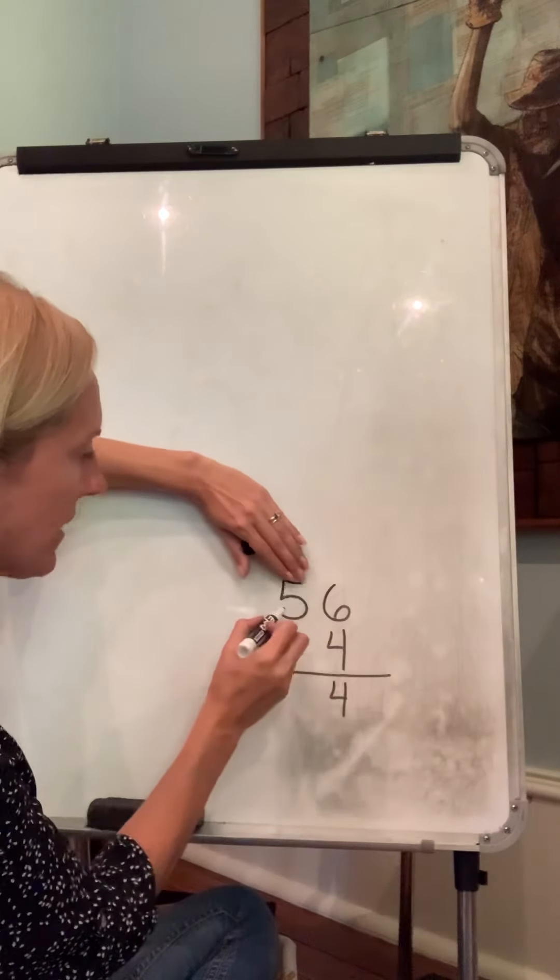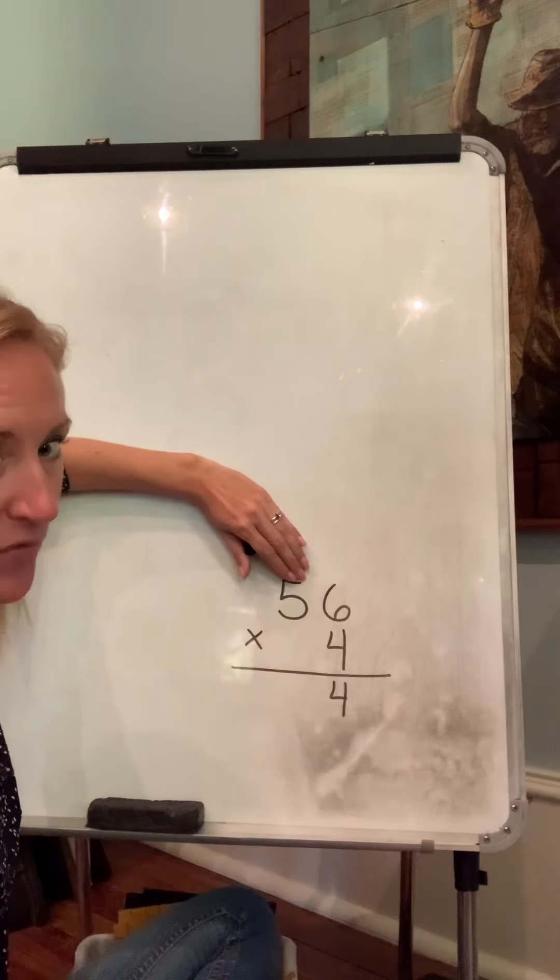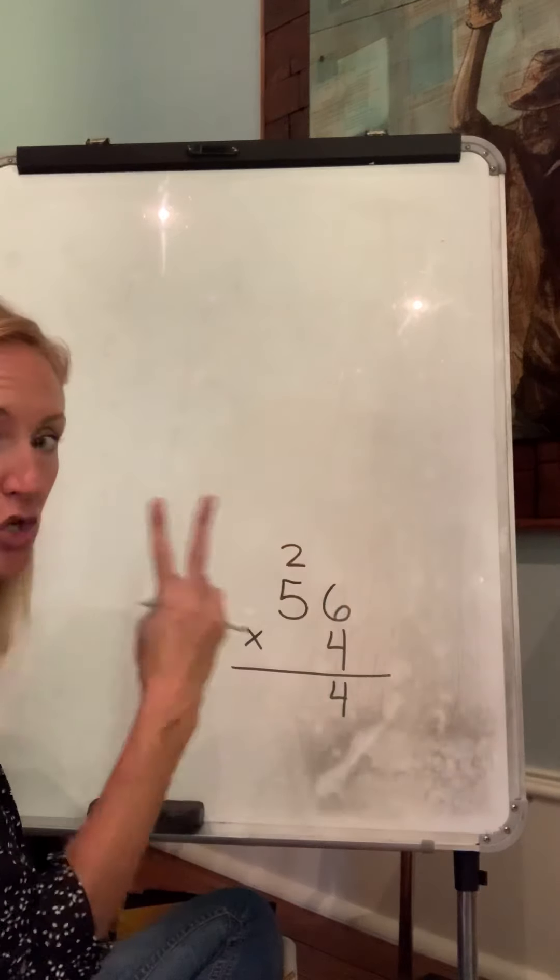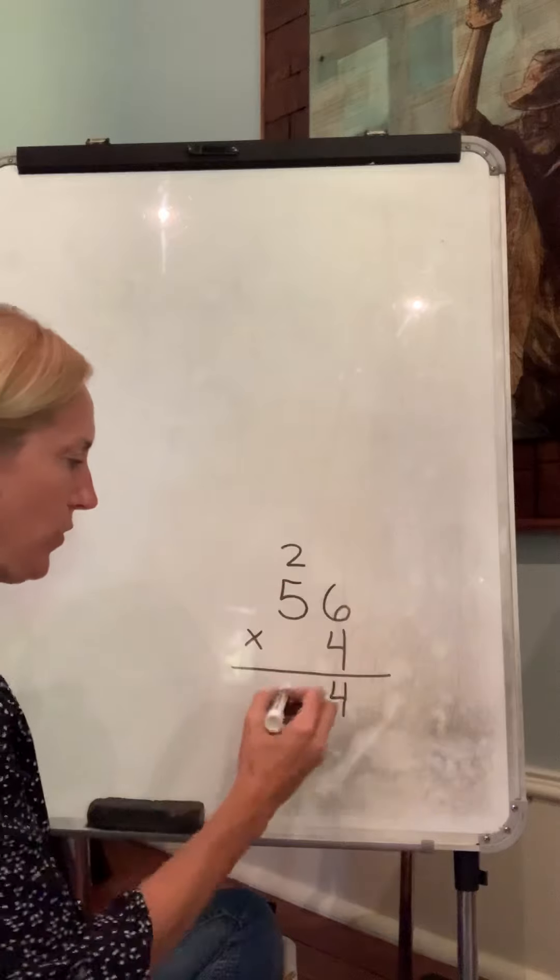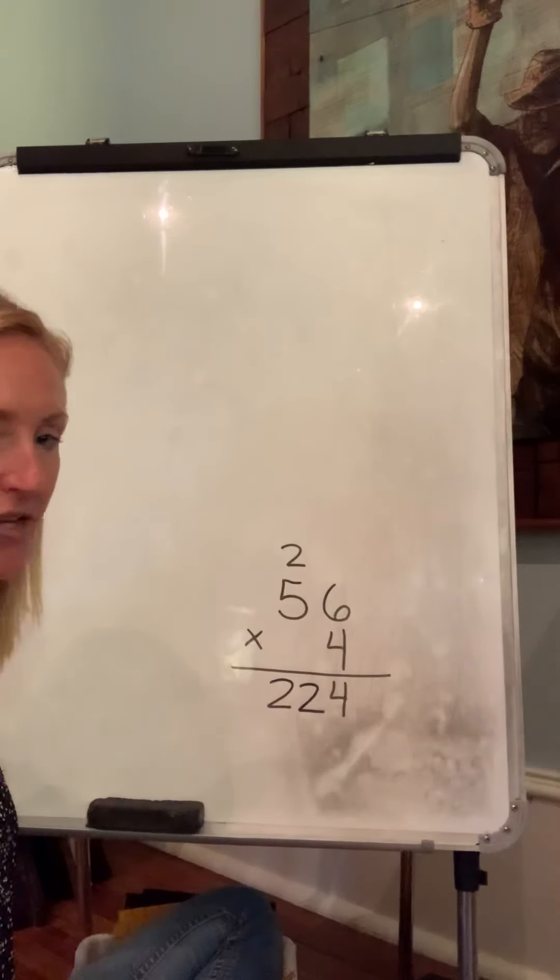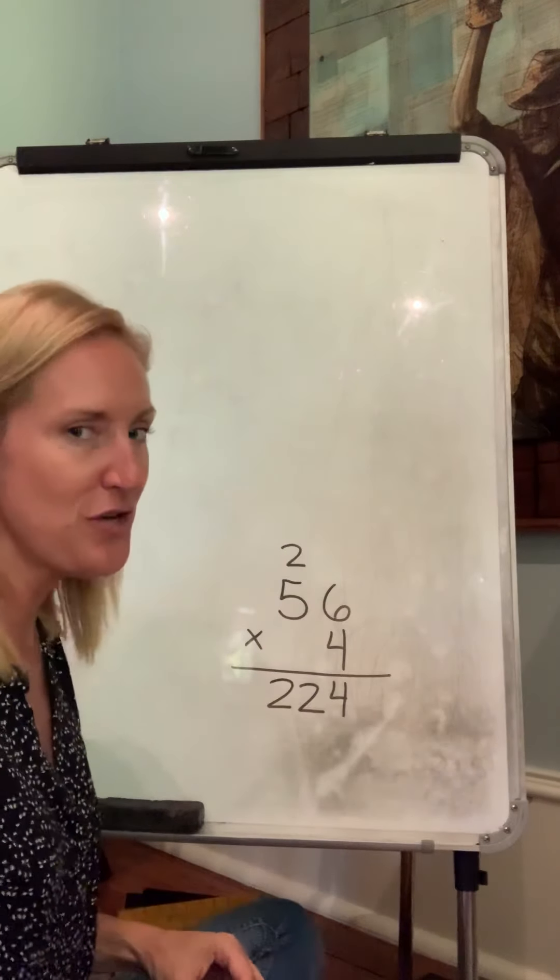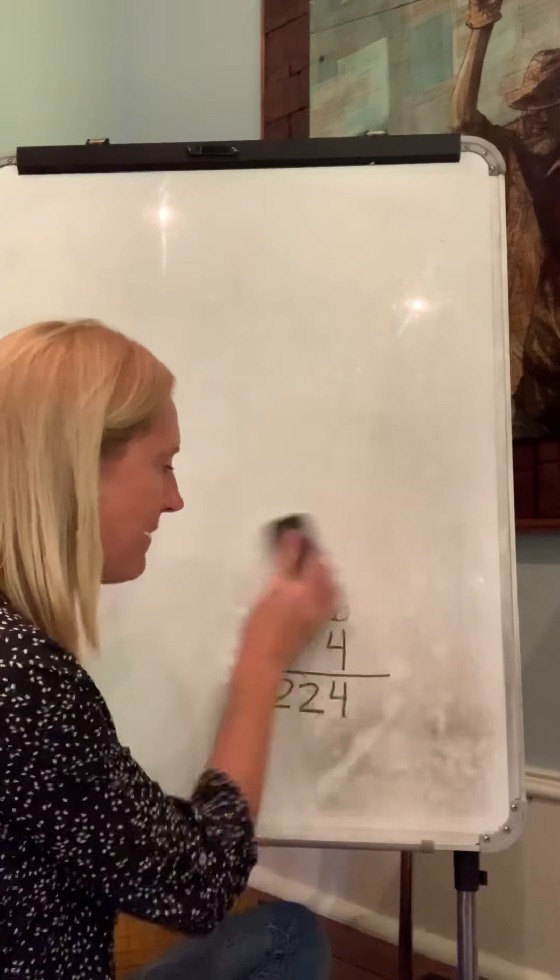Now we're going to do five times four. Five times four is twenty, but we also have to add in these two more tens, so we have twenty-two. Two hundred and twenty-four.